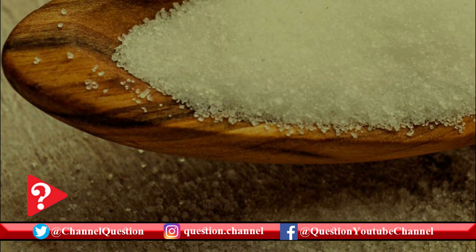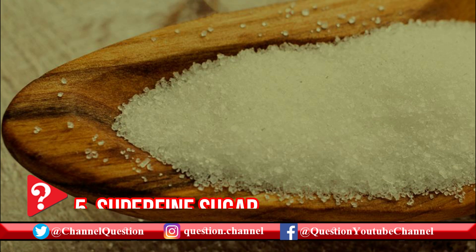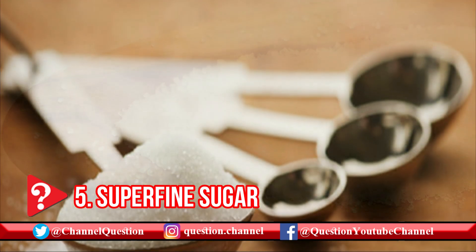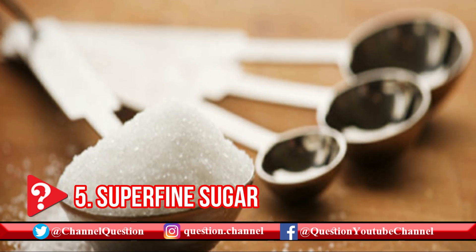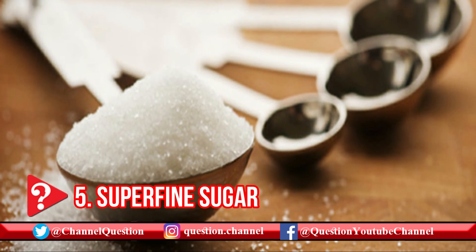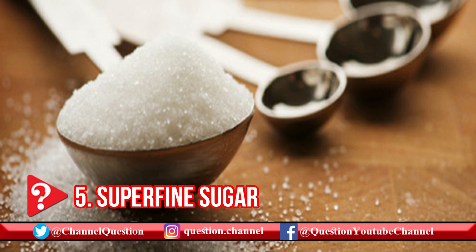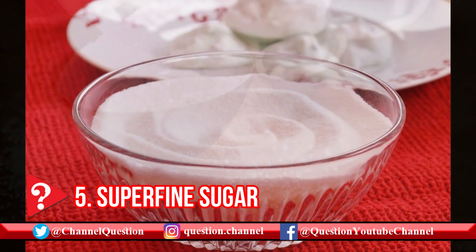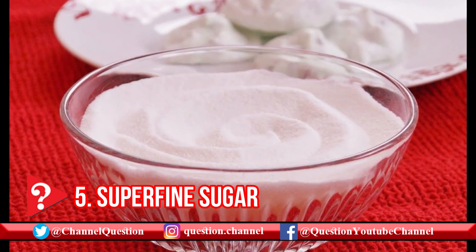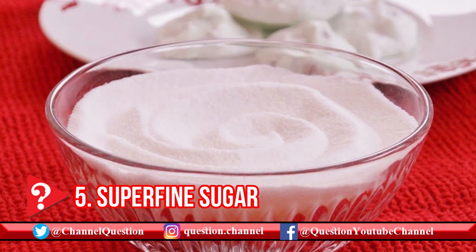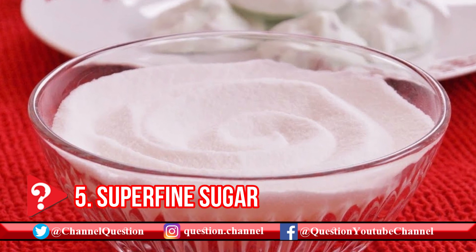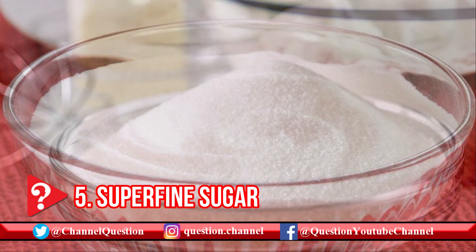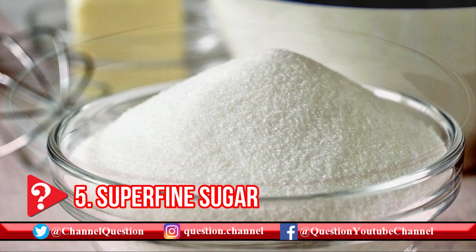Also known as castor or bar sugar, this sugar has the smallest crystal size of white granulated sugars. It is generally used in making delicate or smooth desserts such as mousse or puddings. Because the crystals are so fine, they dissolve easily, even in cold drinks.